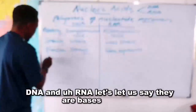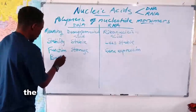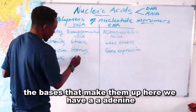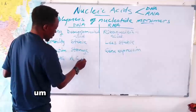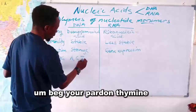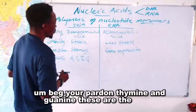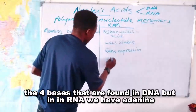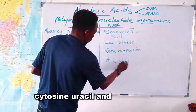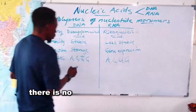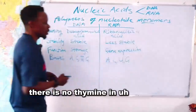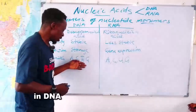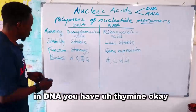Another point of differentiation is the nitrogenous bases. In DNA, the four bases are adenine, cytosine, thymine, and guanine. In RNA, the bases are adenine, cytosine, uracil, and guanine. So RNA has uracil instead of thymine — there is no thymine in RNA, whereas DNA has thymine.